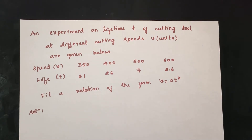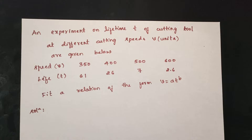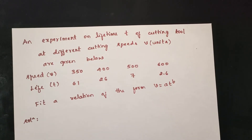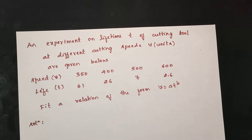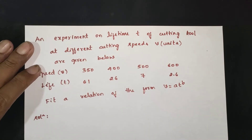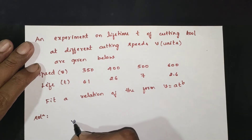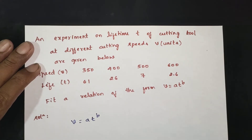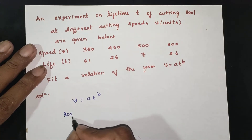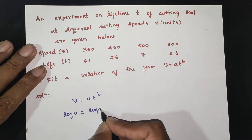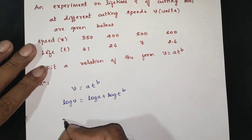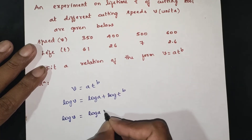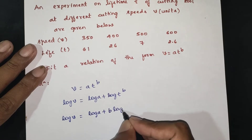This is the next problem. An experiment of lifetime t of cutting tool at different cutting speeds v are given below — speed and lifetime. The relation is v is equal to a·t^b. If you want to work with v = a·t^b, take log on both sides: log v is equal to log a plus b·log t.